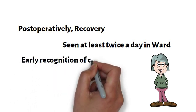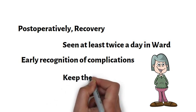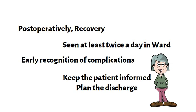Early recognition of complications leads to prompt treatment and complete resolution. If the patient has vomiting and abdominal distension, identify the cause and manage appropriately. If the patient is unable to void urine, or is not passing flatus, similarly identify the cause and manage. Keep the patient and her family informed of her progress and reassure them if all is well. Plan the discharge early with careful instructions for the patient's recovery at home.